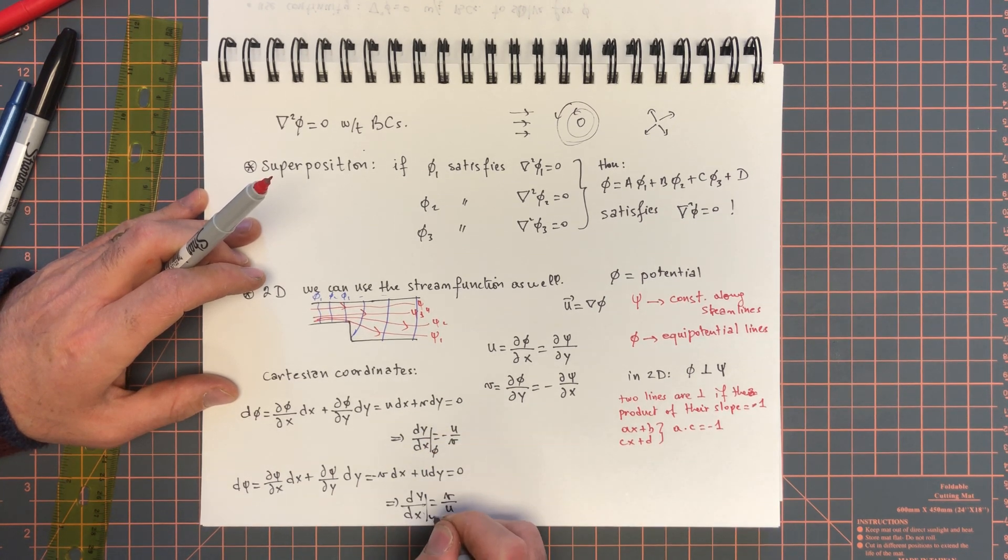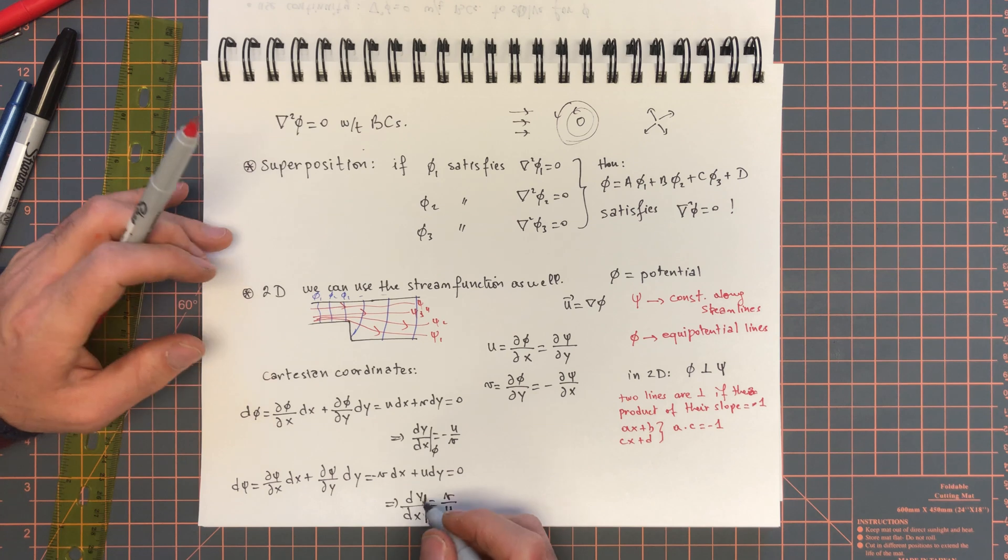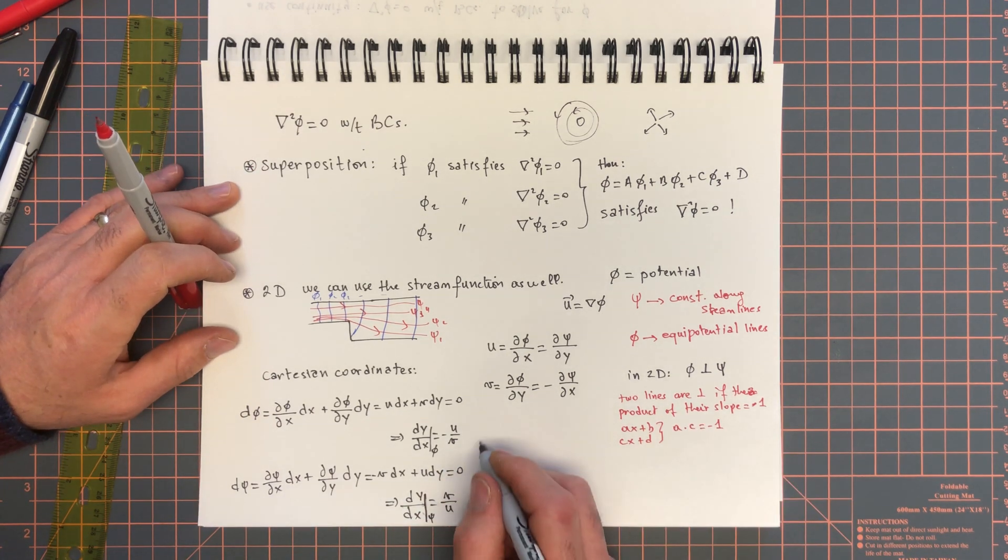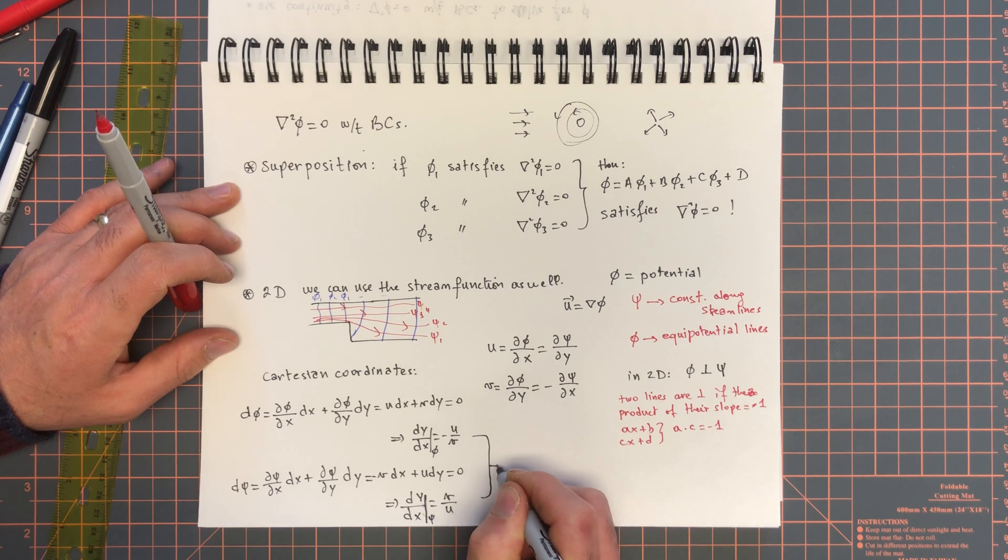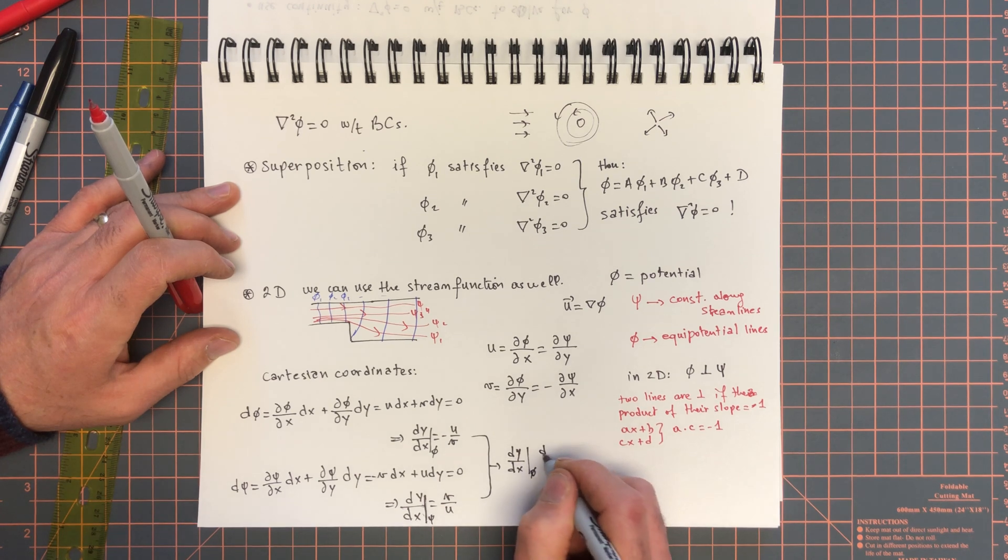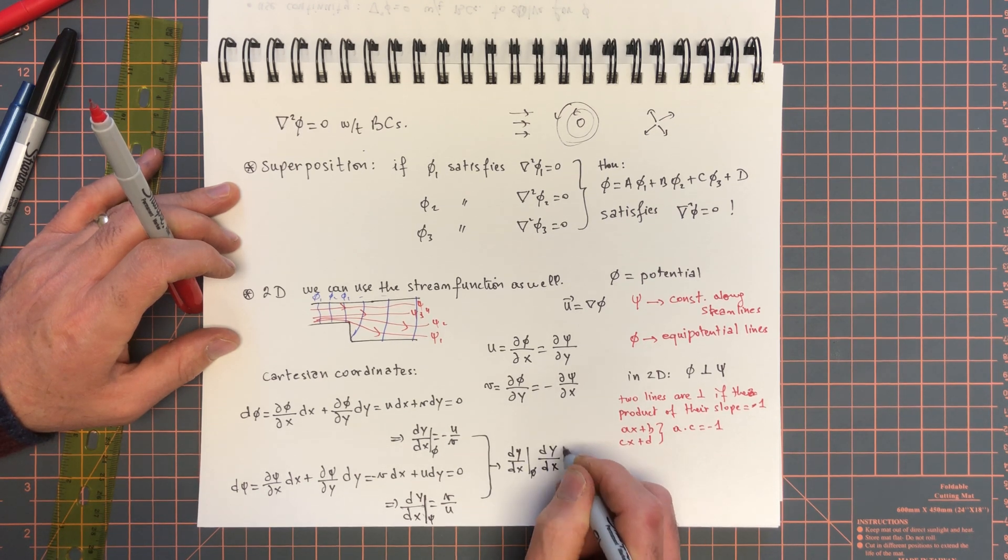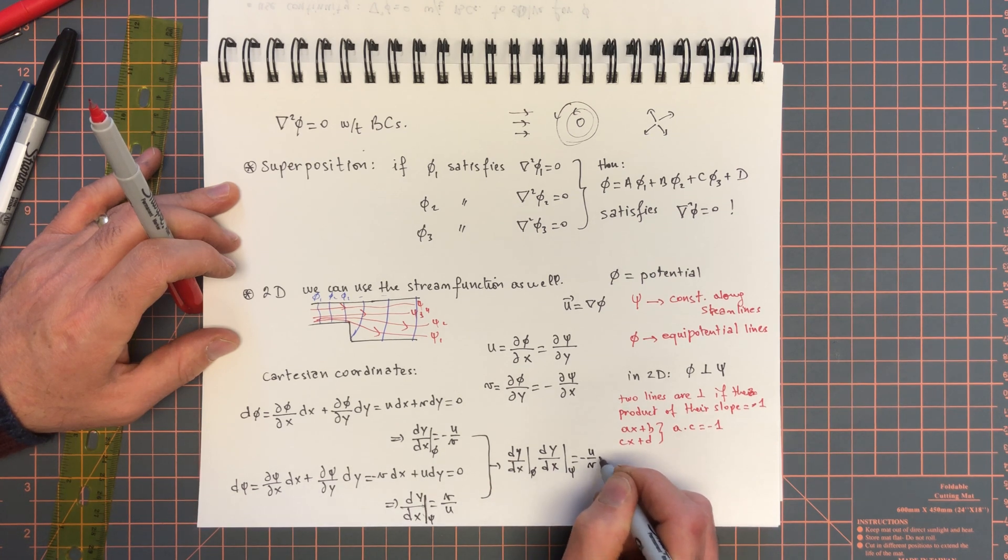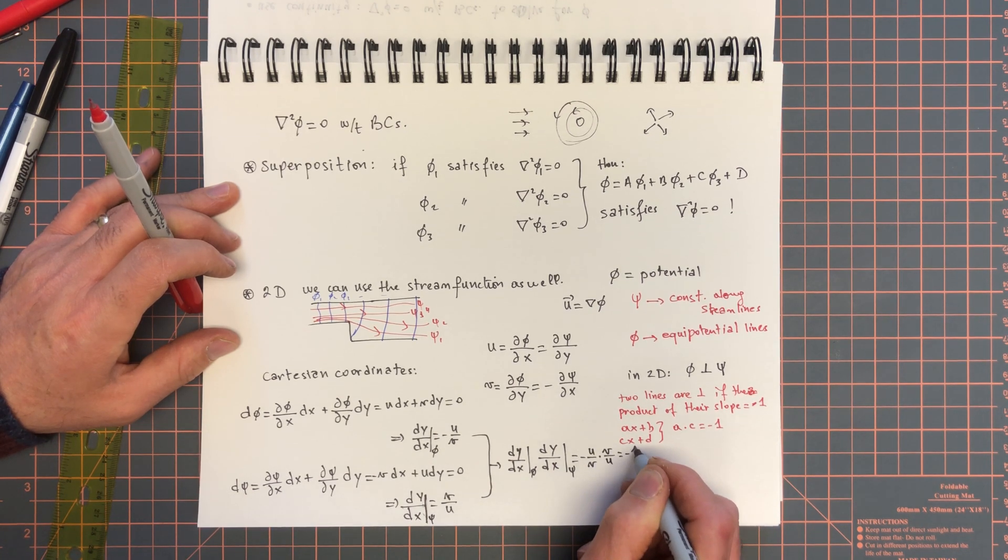So, this is for phi, and this is for psi, dy by the slope for psi and the slope for phi along a streamline. And therefore, when you combine these two, dy by dx, the slope for phi, times dy by dx, the slope for psi, that's equal to minus u over v times v over u, that's equal to minus 1.